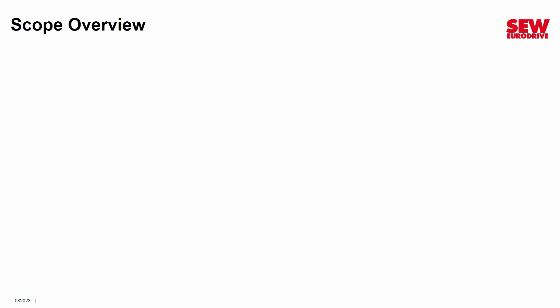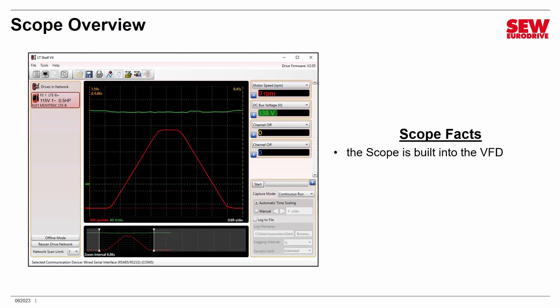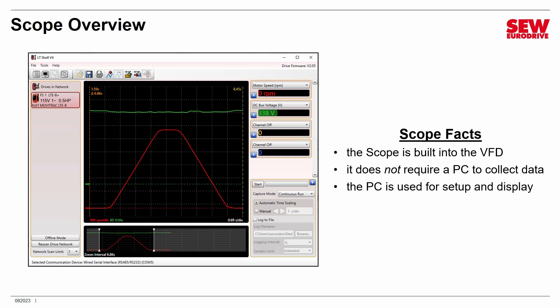Let's overview the scope a little bit. A few facts: the scope is actually built into the VFD. You use LTShell to display the data from it, but the scope hardware is inside the VFD, not the PC. That's very important — the scope does not actually require the PC to be present to do its job. The PC is only used for setting it up and displaying the data. You can configure the scope, close LTShell, disconnect, and walk away, and the scope is still within the VFD doing its job. When the right conditions come, it will collect data. You can then come back later, plug back in, start up LTShell, download the data, and look at it on your PC.